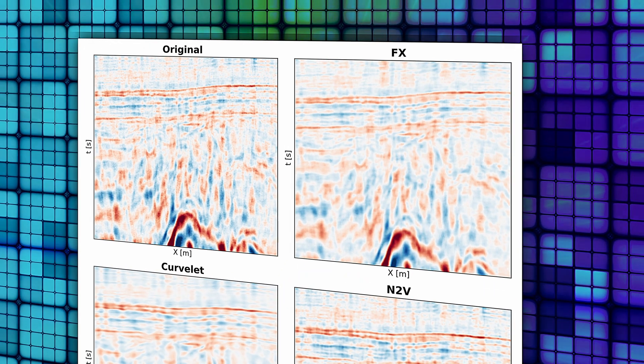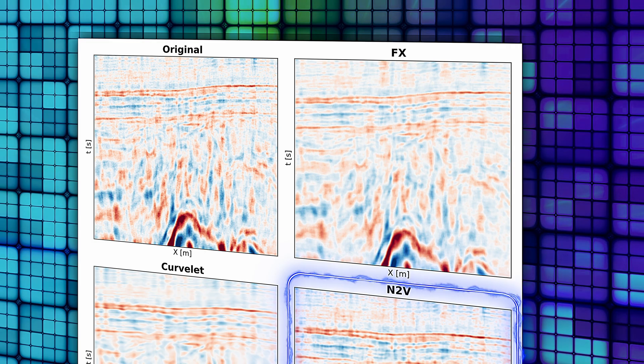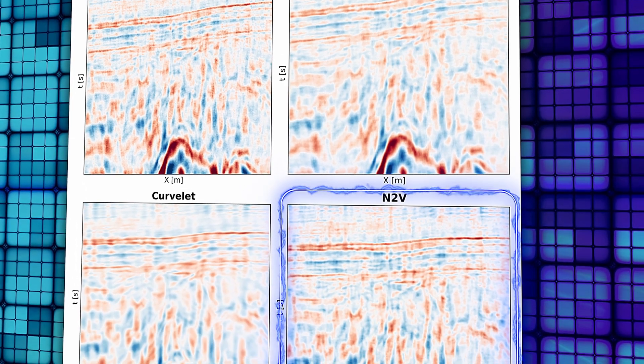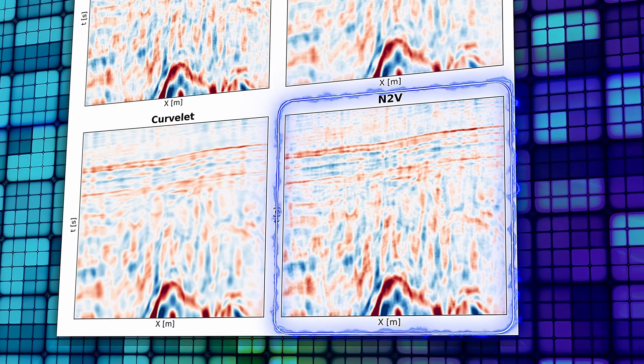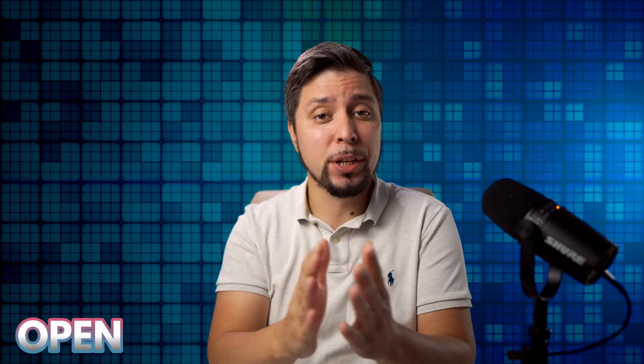Finally, we look at the denoised and original data inversion results. Noise2Void appears to retain more information and better contrast between features, much like what we've seen in the image domain. Here's another useful video on using deep learning to filter out coherent noise in seismic data. If you are the author or know an interesting and open ML paper in oil and gas, reach out to me.